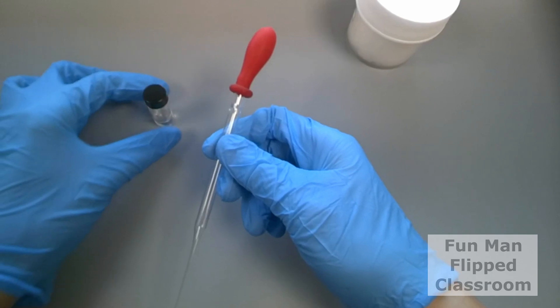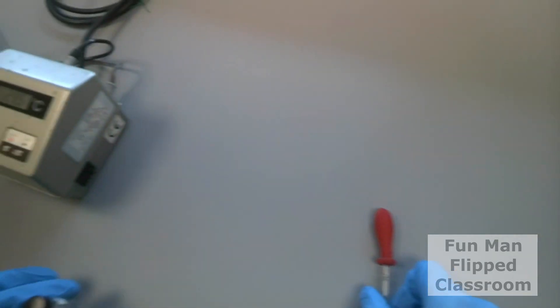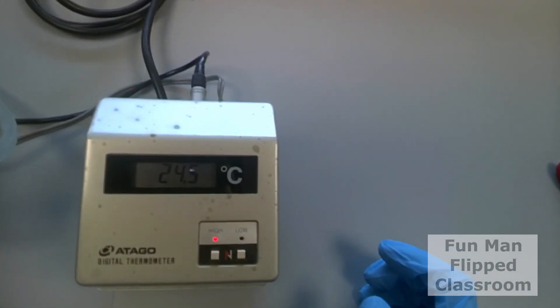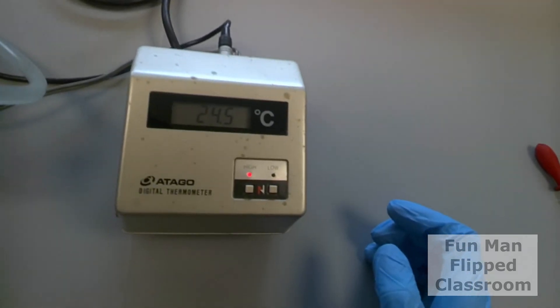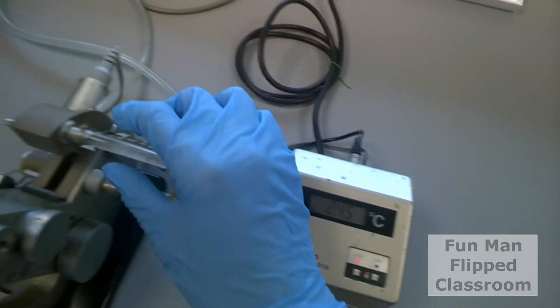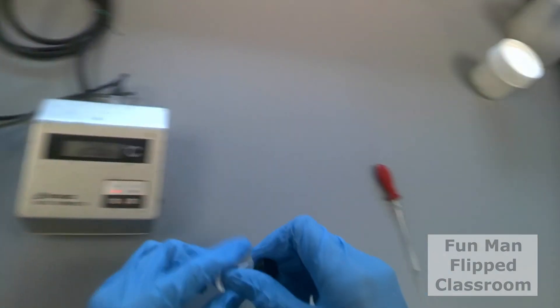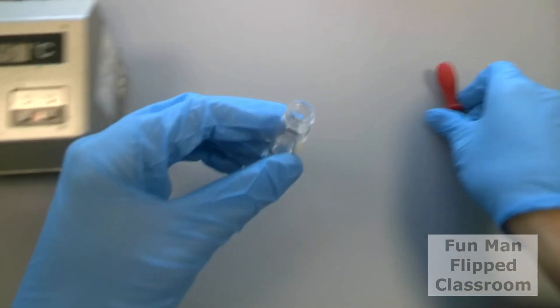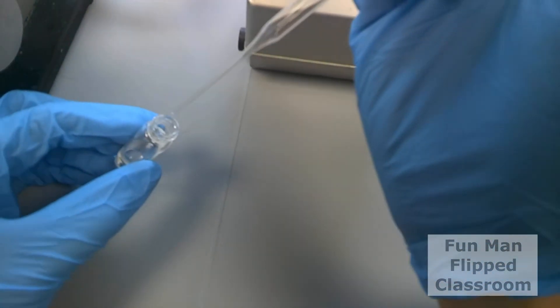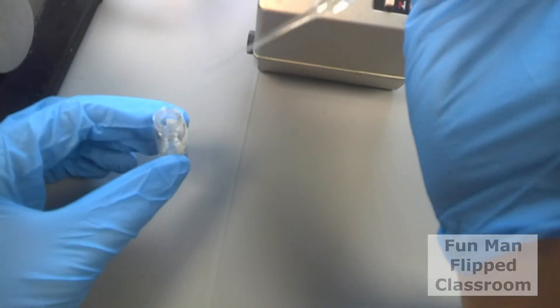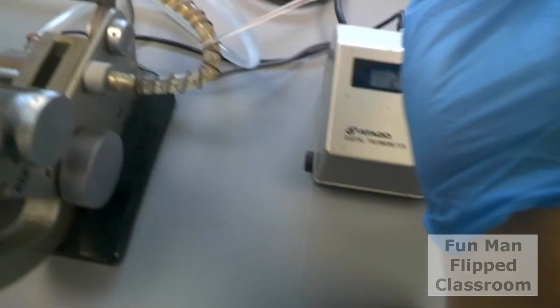Next, take your sample from the vial. Note the temperature again. And withdraw the sample using a glass pipette.